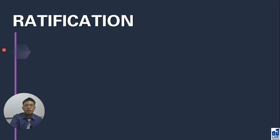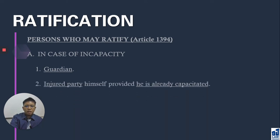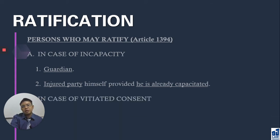In ratification, you also have to remember who can ratify. Simply put: the injured party. In case of incapacity, the guardian may ratify, or the injured party himself, provided he is already capacitated. So in case of a minor, upon reaching the age of majority, he can ratify if he wants to. In case of incapacitated persons, when they regain their capacity, they can ratify the avoidable contract. In case of vitiation of consent, the injured party whose consent was vitiated may ratify the contract later on.